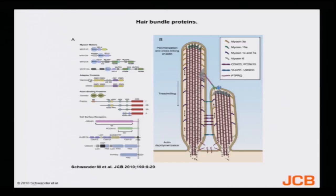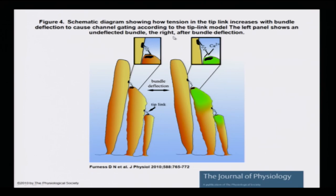You have actins, myosins, adapter proteins, and linker proteins and so forth. This is how the molecular architecture looks — a very complex and beautifully knit structure. There are wonderful super-coiled proteins forming the base framework connected with each other, with a whole range of subtypes. For these schematics, please refer to the Furness D.N. article in the Journal of Physiology.